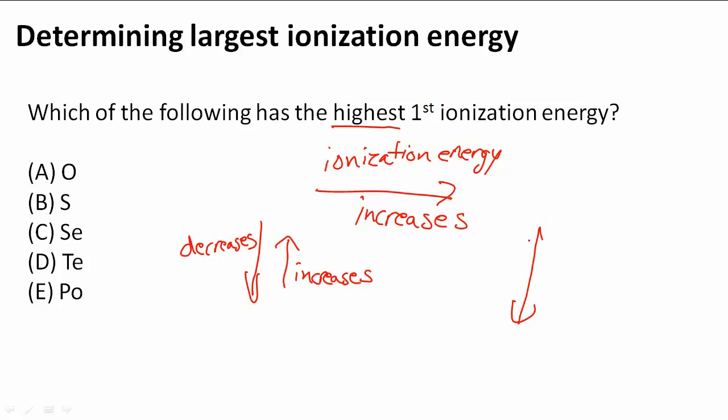So which one of them has the highest ionization energy? We know what we really need to use is this fact right here. As we go up, ionization energy increases. So we go up closer and closer, that means the atomic radius is getting smaller and smaller. That means it's going to be harder to take an electron. That's why its ionization energy is so high.